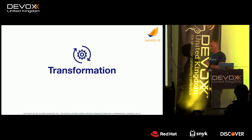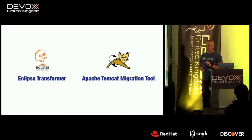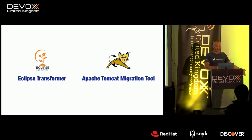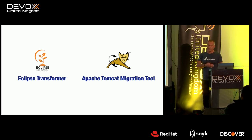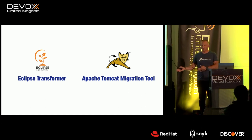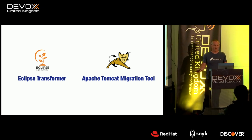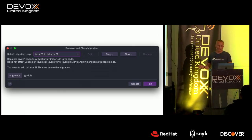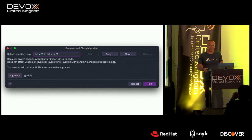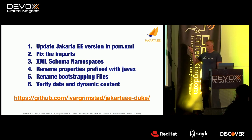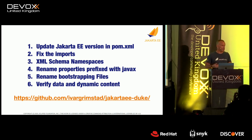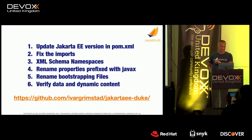Luckily there are ways to cope with this. One is transformation — if you don't have access to your source code, you can use the Eclipse Transformer or the Apache Tomcat Migration Tool to do bytecode translation from the javax namespace to the jakarta namespace, without touching your code. Just drop the JAR or WAR file into these transformers and they'll do it for you. IDE support is also available — IntelliJ has a migration from Java EE to Jakarta EE that does all the migration for you.